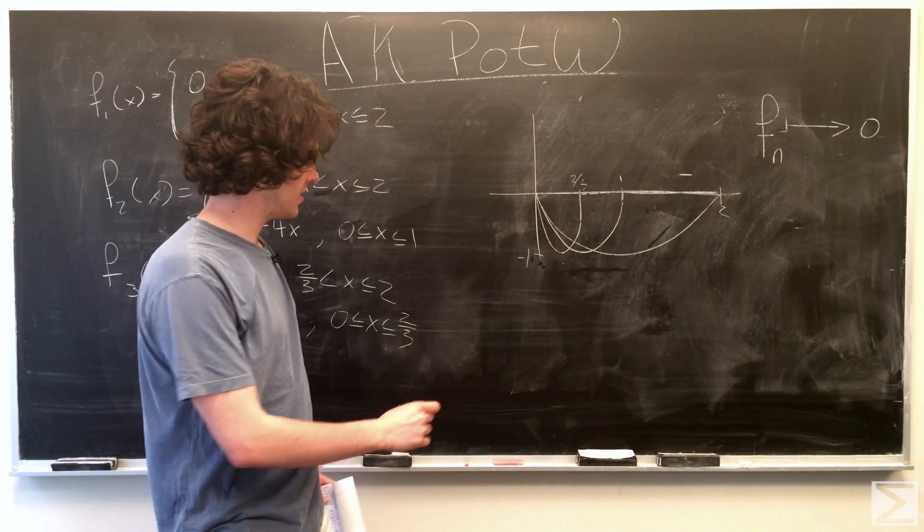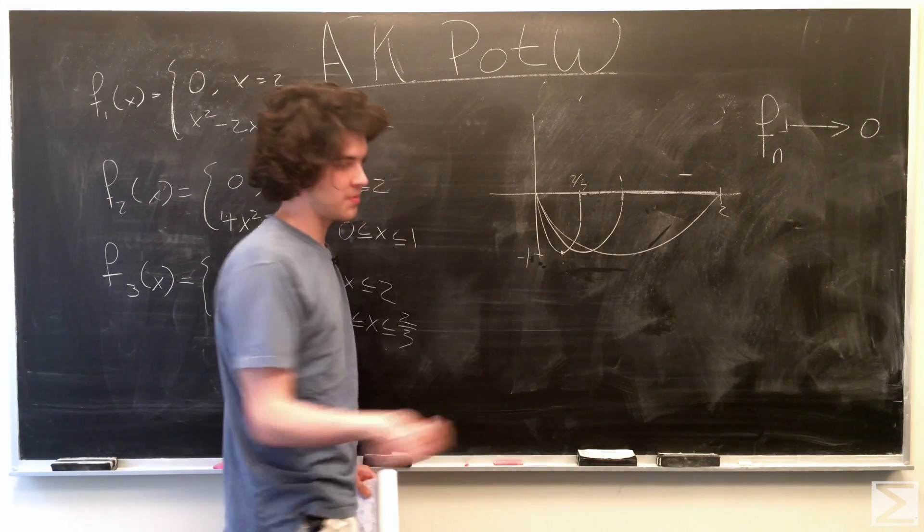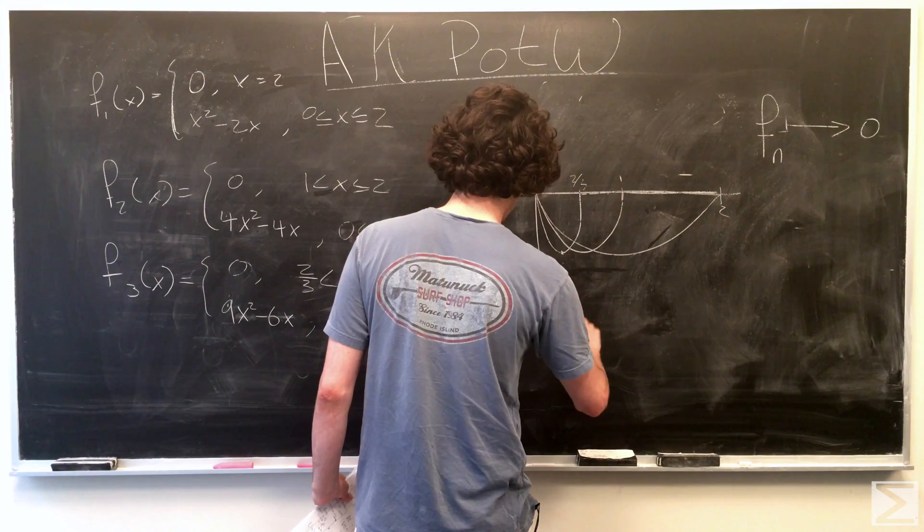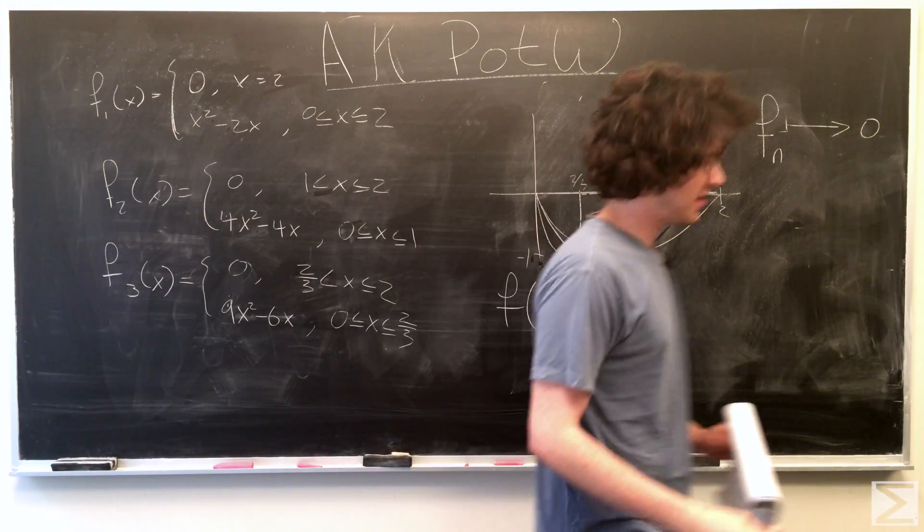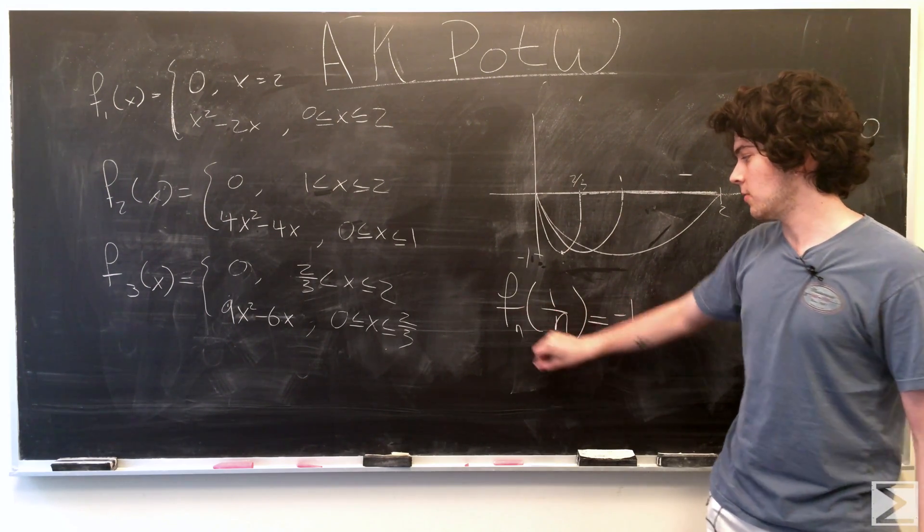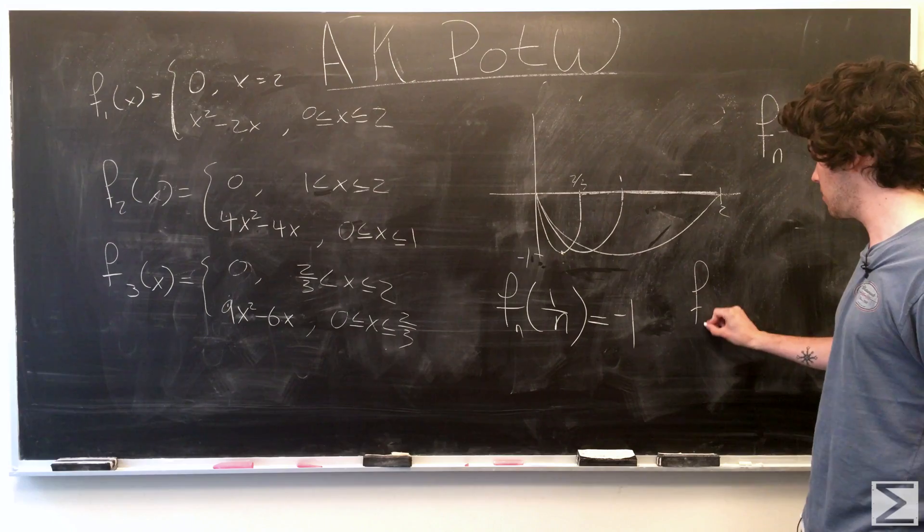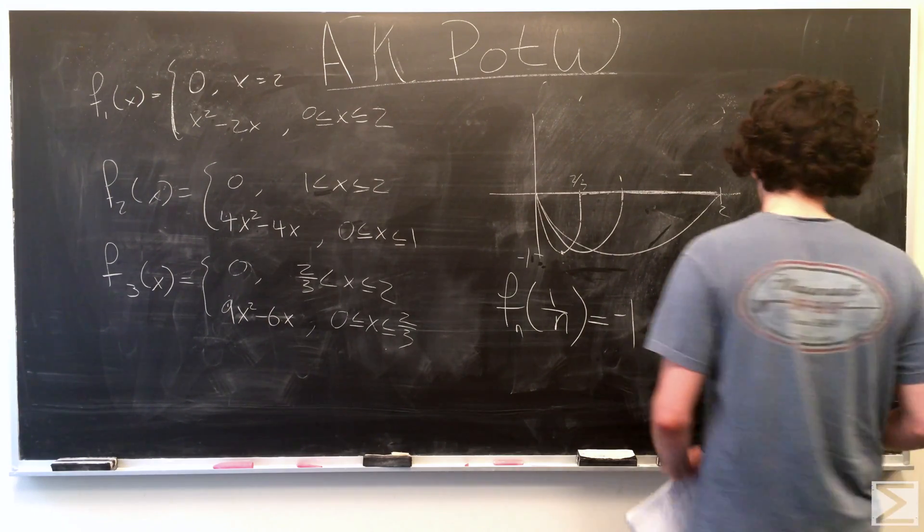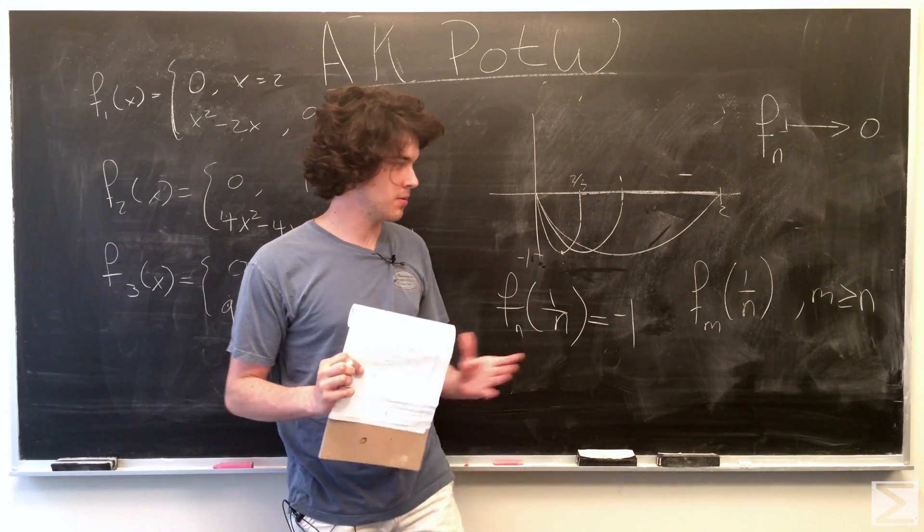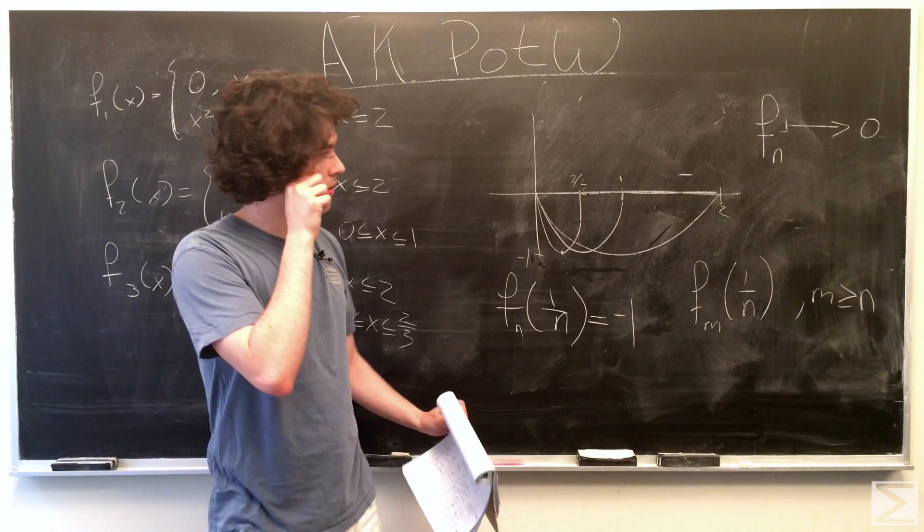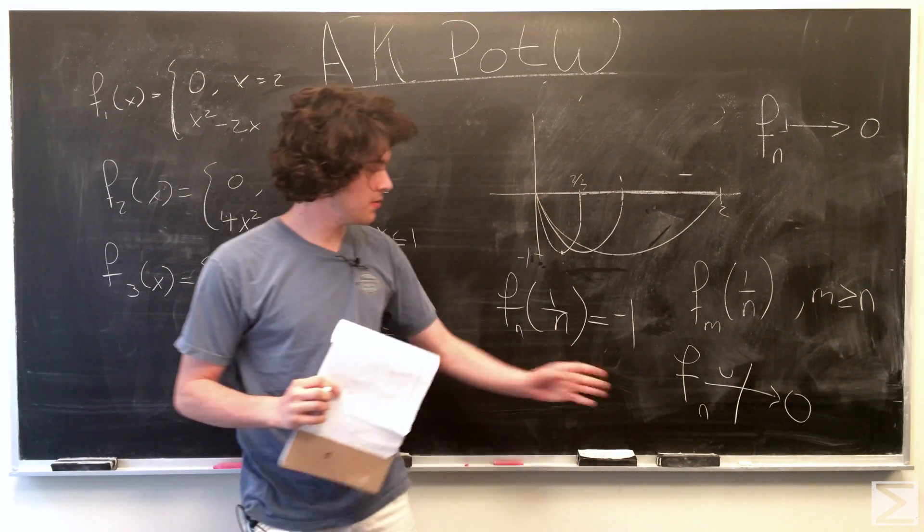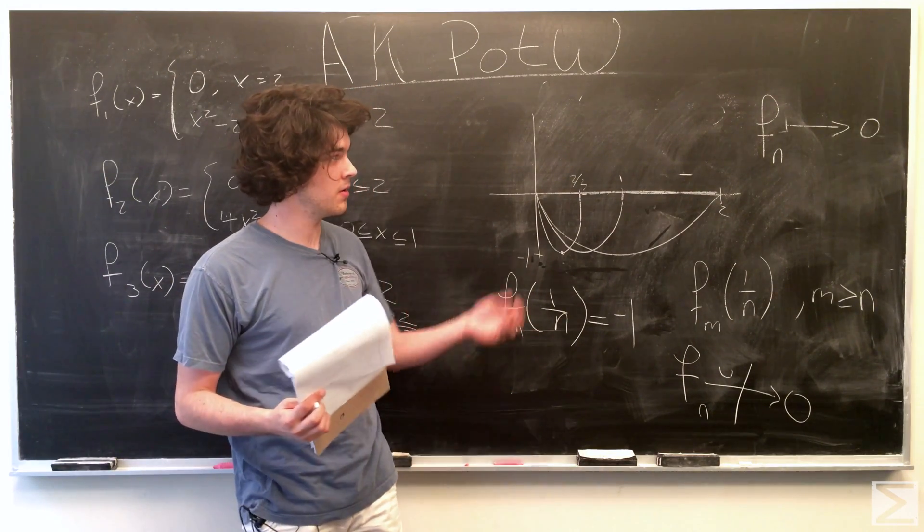However, if we look at a certain point, let's choose the bottom of the parabola. That point is going to equal negative 1 for all functions, no matter what. So, if we look at any function f sub m of 1 over n, it's always going to be equal to 1 where m is greater than n. So, the sequence of functions does not uniformly converge to 0, only pointwise.